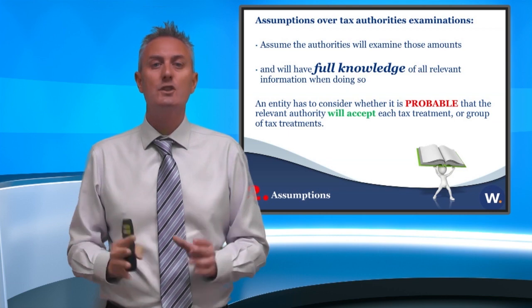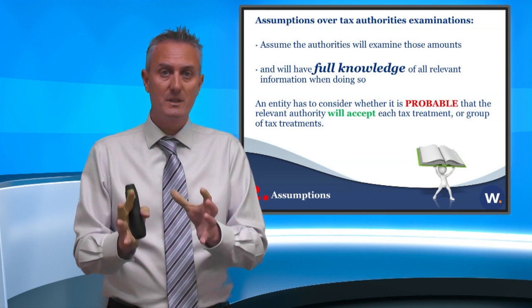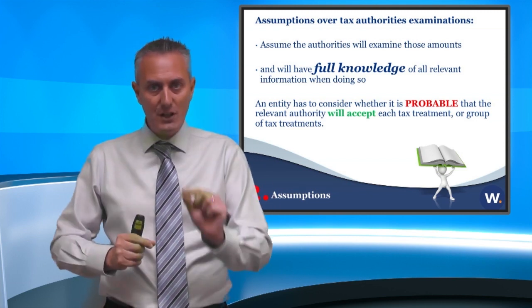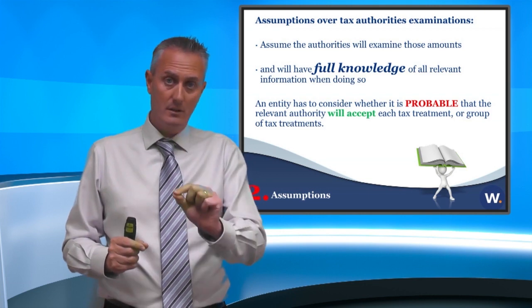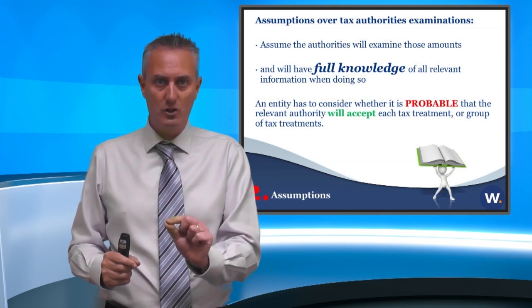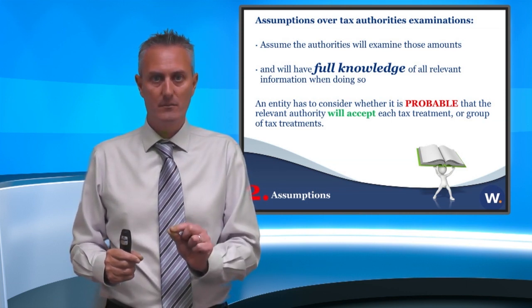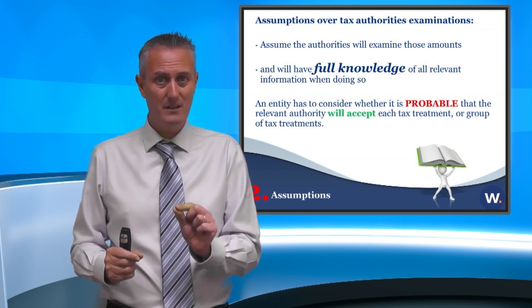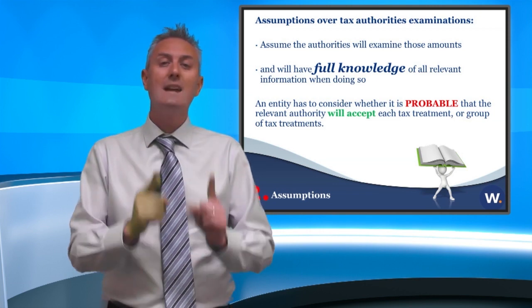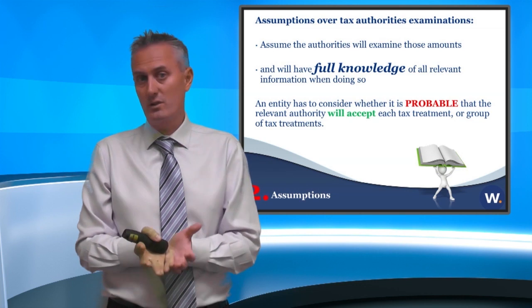The second thing says you need to make assumptions. This is very contentious at the moment, because what we're saying is: you need to assume that the tax authorities would investigate any of the tax positions you've got, and that they would have full knowledge of all the relevant facts and circumstances. That's quite heavy — think about it. We're saying effectively you have to assume that they would investigate you, and you have to assume that they would have full knowledge of everything around that structure you've entered into.